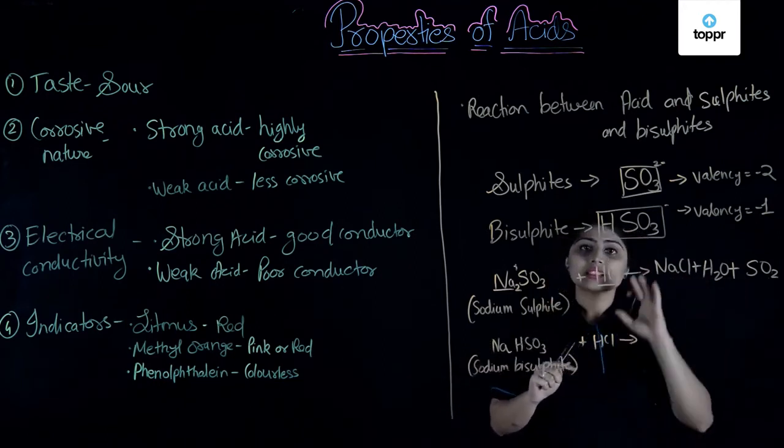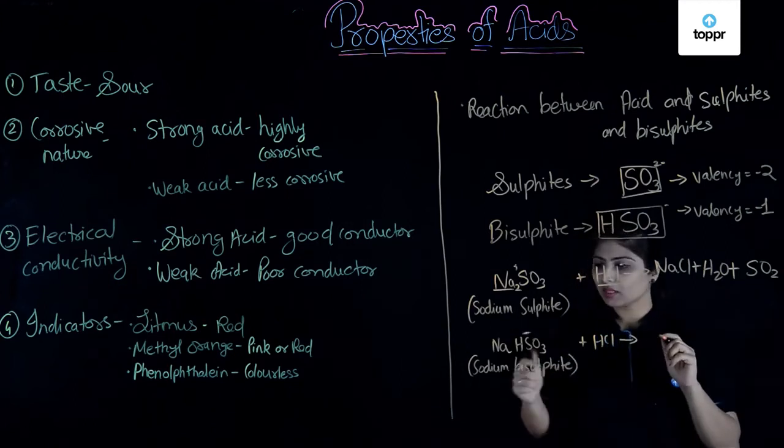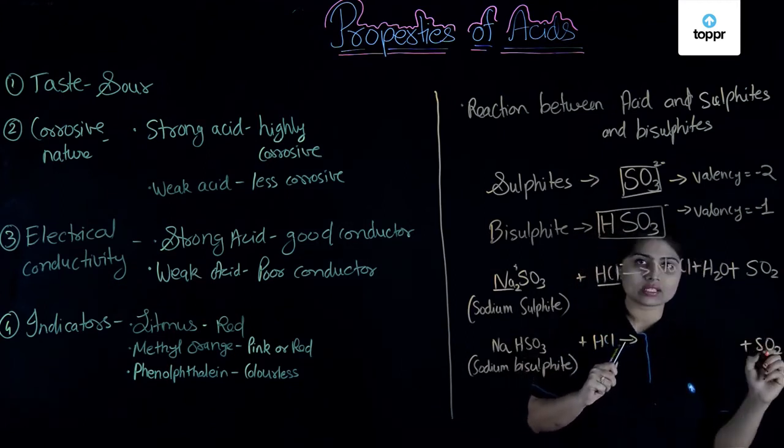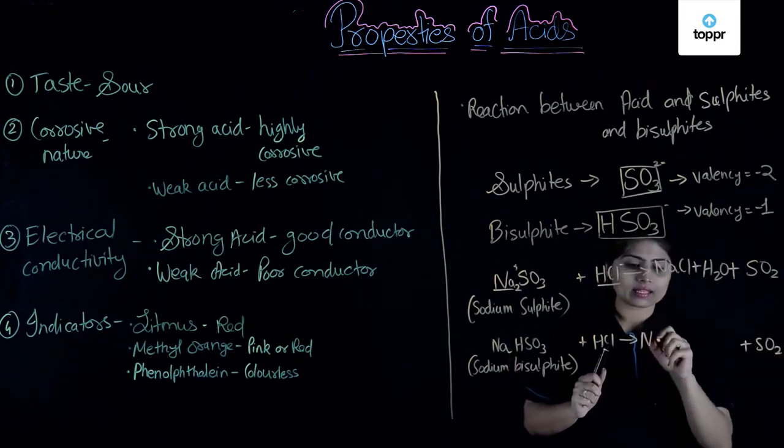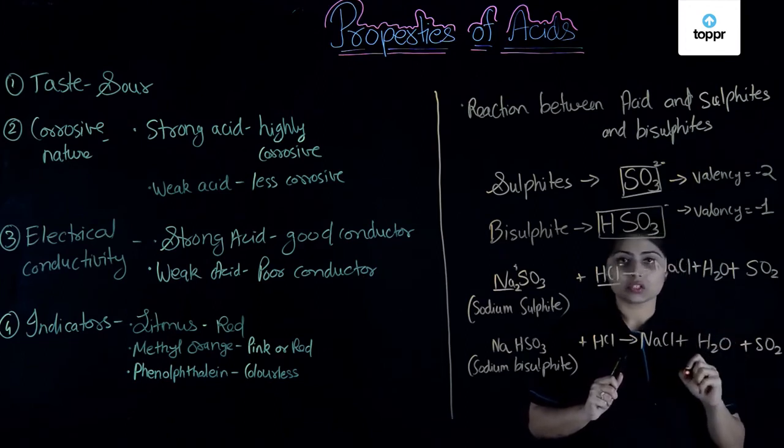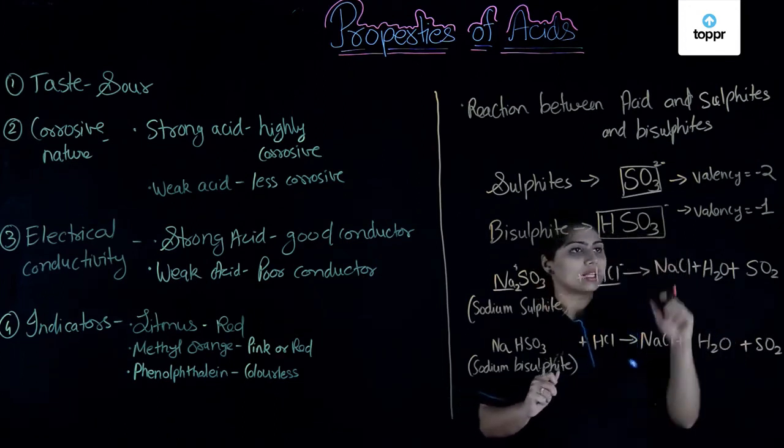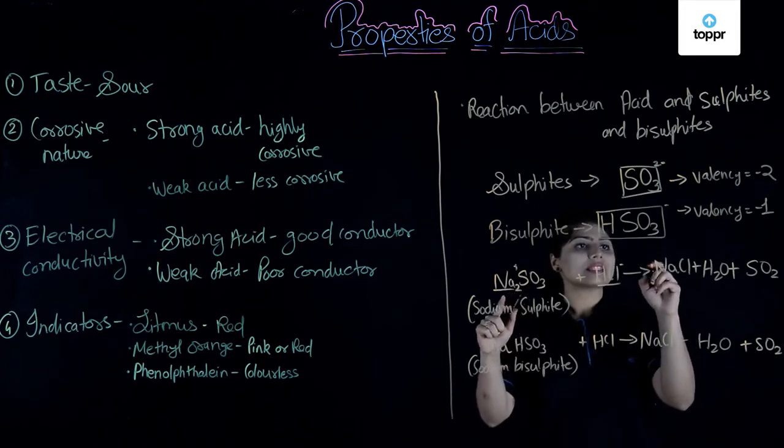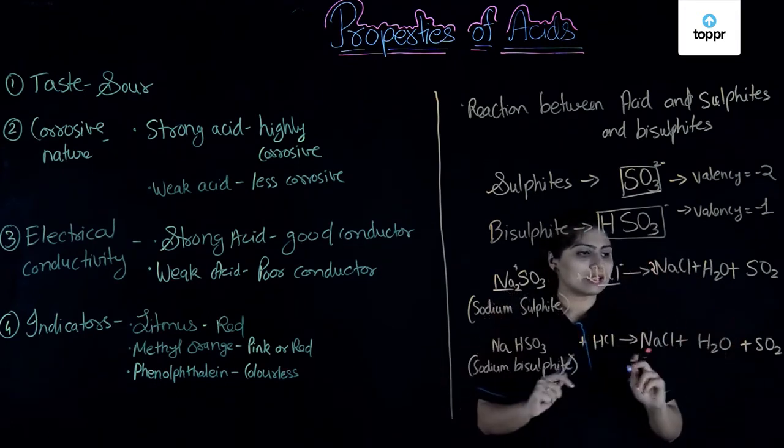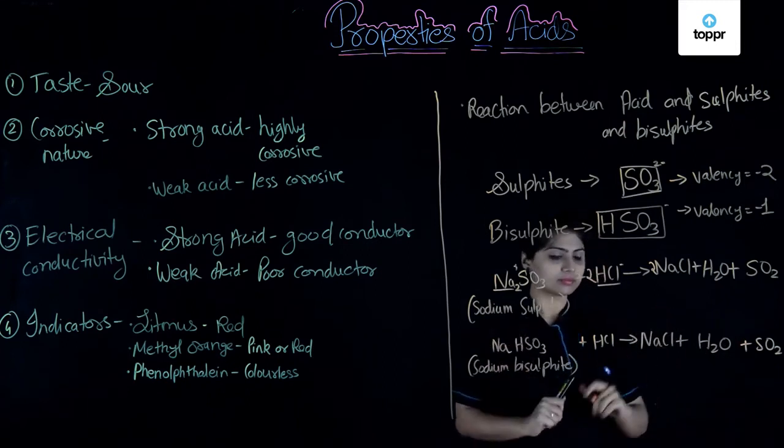Now, in this reaction same three things are going to be formed. Here SO3 will yield SO2 that is sulphur dioxide gas. Then Na will go with Cl and form NaCl. And we also get water produced in this reaction. Now, here we need to balance the equation. We have 2 NaCl and 2 HCl. Here we do not need to balance. It is self balanced.